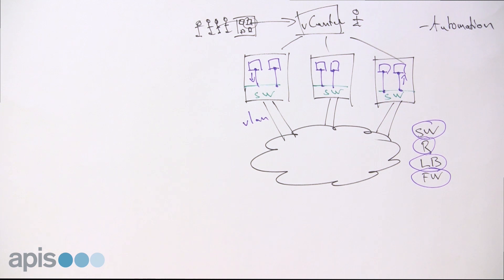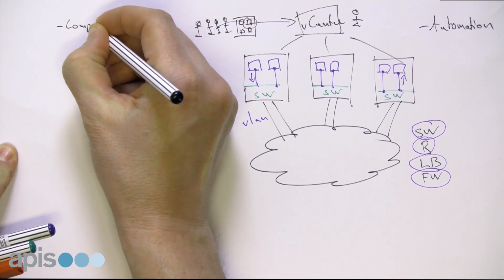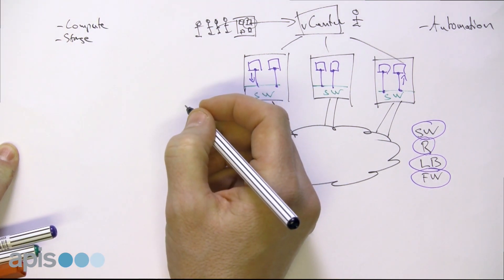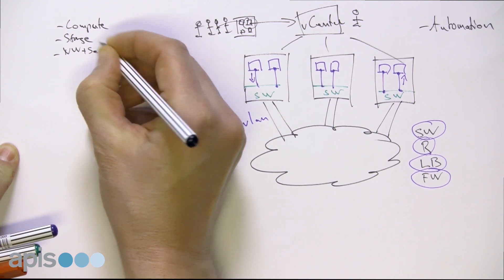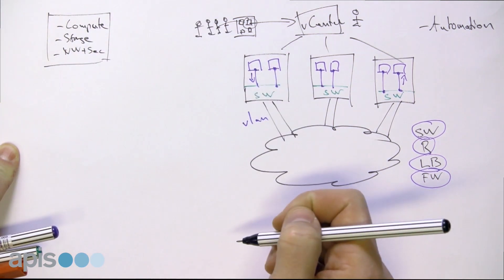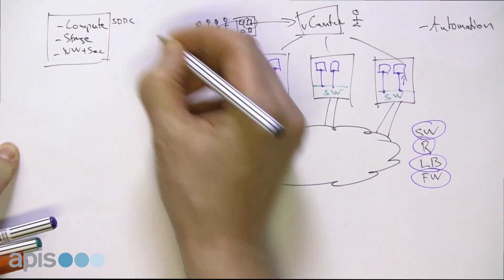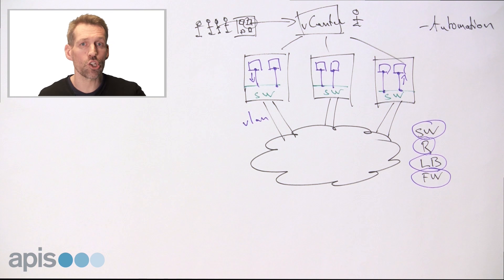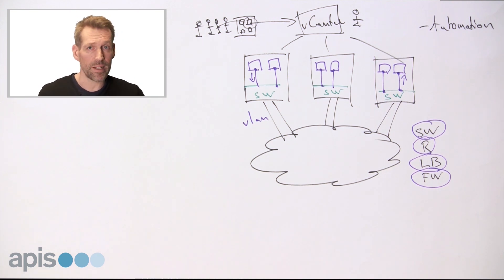A traditional data center typically has virtualized compute and virtualized storage, but we'd like to add virtualized networking and security. If we can virtualize all of these entities, we have what we refer to as an SDDC — a software-defined data center — where everything logical is created in software. You can consume it, copy it, use it, or throw it away without any limitations.